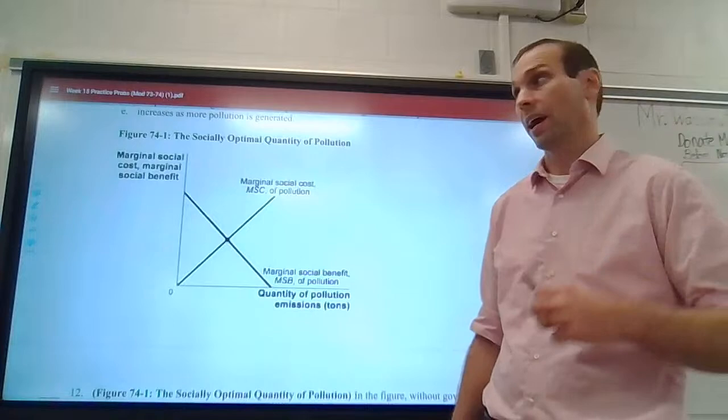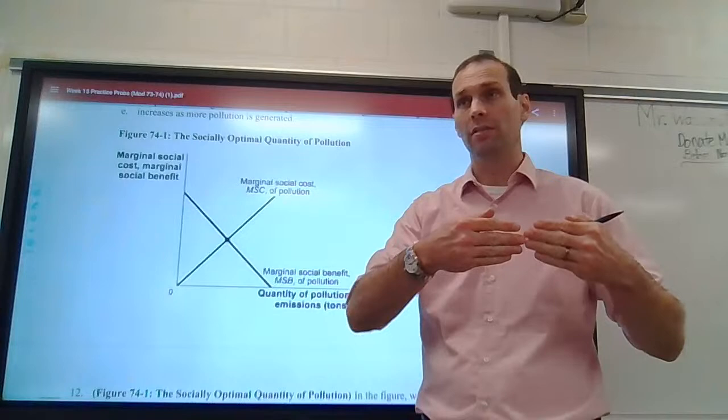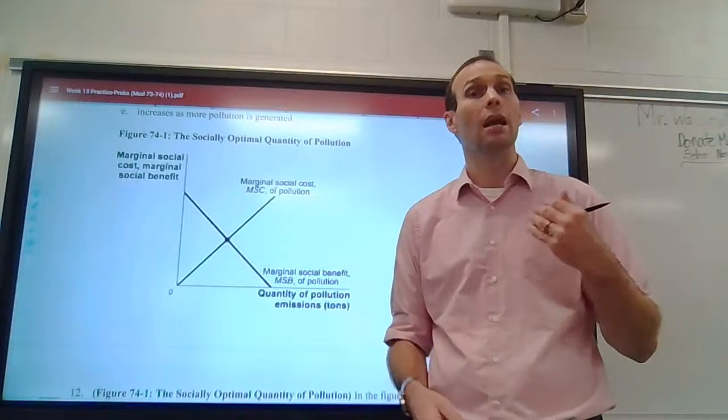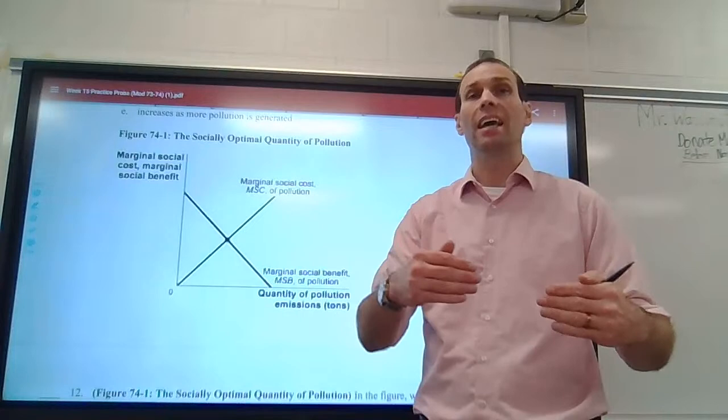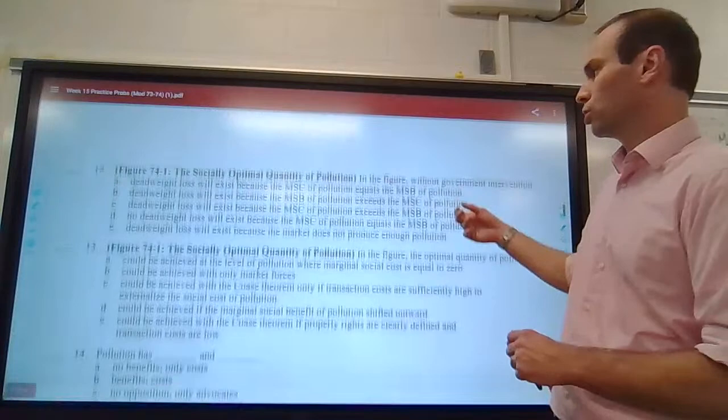We don't ignore costs to find socially optimal — we need to take them all into account. Remember, marginal social cost is marginal private cost — that would be our typical supply curve in the market — plus the external cost in society. Marginal social benefit is the marginal private benefit, the demand curve in a market, plus external benefits that could come with a positive externality. Never both at the same time.